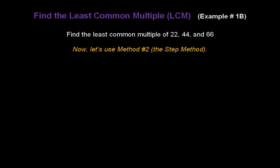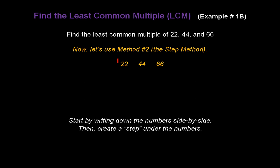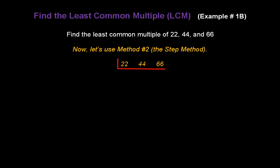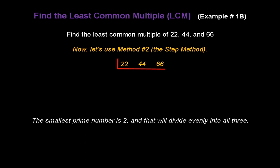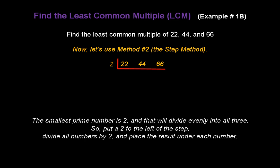Now, let's do the same problem using method number 2, the step method. Start by writing down the numbers side by side: 22, 44, 66. Then create a step under the numbers and ask yourself: what's the smallest prime number that will divide evenly into any of the numbers? The smallest prime number is 2, and it happens to divide evenly into all three numbers. So, put a 2 to the left of the step. Divide all the numbers by 2 and place the result under each number: 22 divided by 2 is 11, 44 divided by 2 is 22, and 66 divided by 2 is 33.